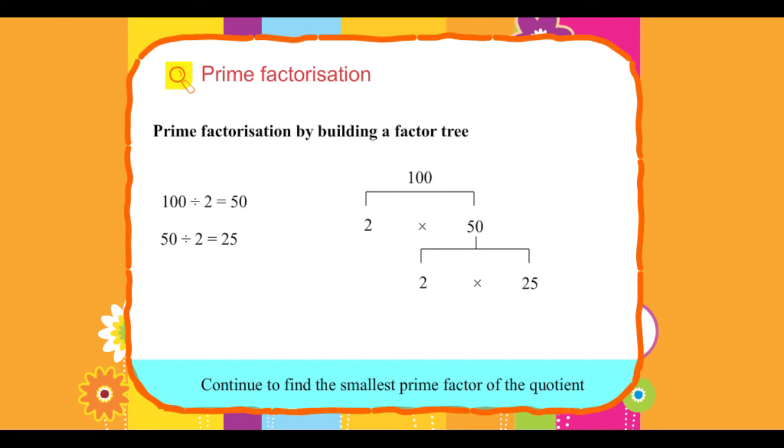Continue to find the smallest prime factor of the quotient. 25 divided by 5 equals 5. The tree ends when all factors are prime. Prime factors of 100 are 2 into 2 into 5 into 5.